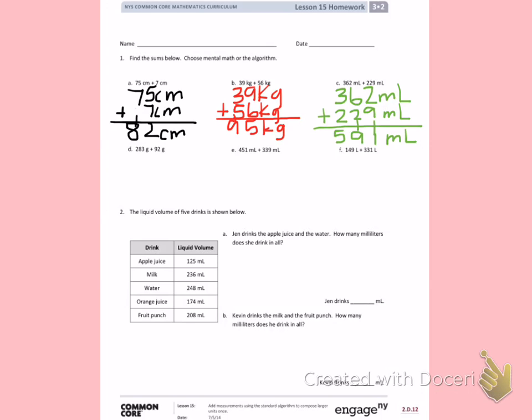Letter D. 283 grams plus 92 grams. I want to make sure that I line up 92 under the 10s place since I have 9 10s, not 9 100s. 3 plus 2 is 5. 8 plus 9 is 17. 2 plus 1 is 3. My total is 375 grams. Double check that you're adding that measurement each time since we are adding measurements.